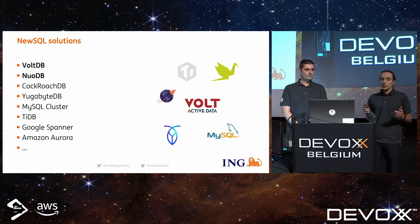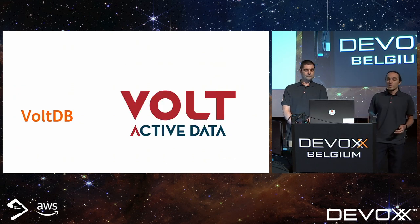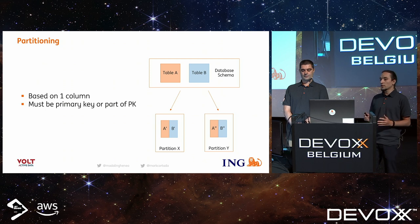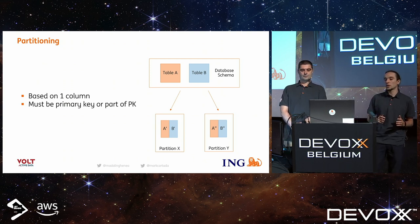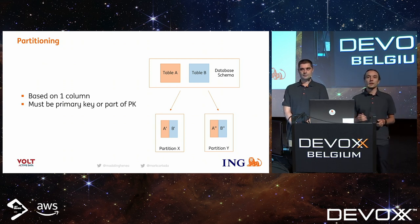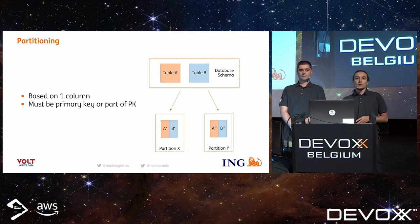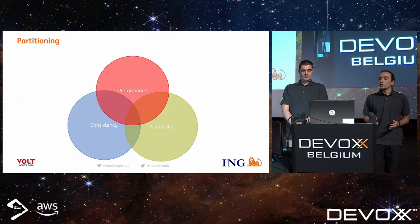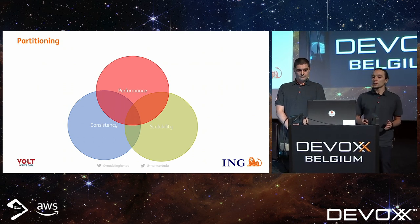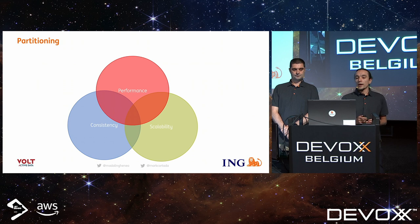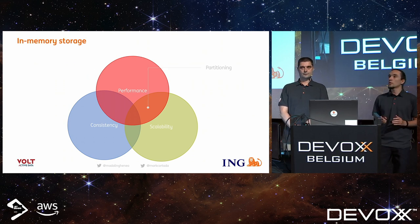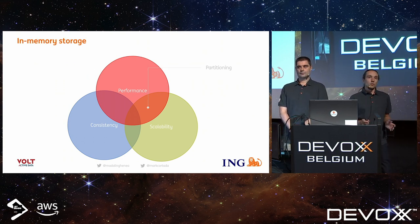Let's start with VoltDB and first talk about partitioning. Partitioning is a mechanism through which data is split across multiple nodes or partitions. We have a simple example with two tables A and B, whose data is split between partition X and partition Y. In VoltDB, partitioning is done based on one column, and that column must be the primary key or part of the primary key. Partitioning improves both performance and scalability.